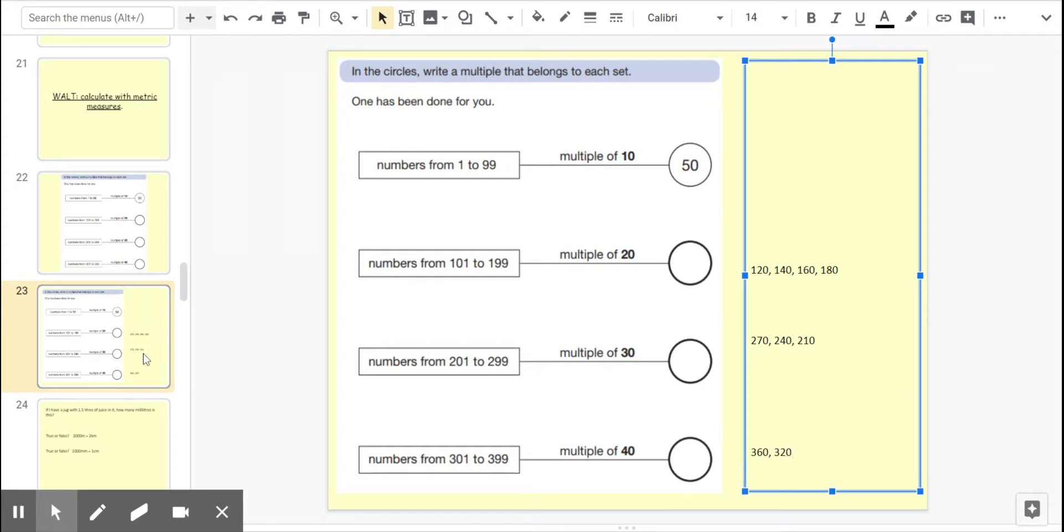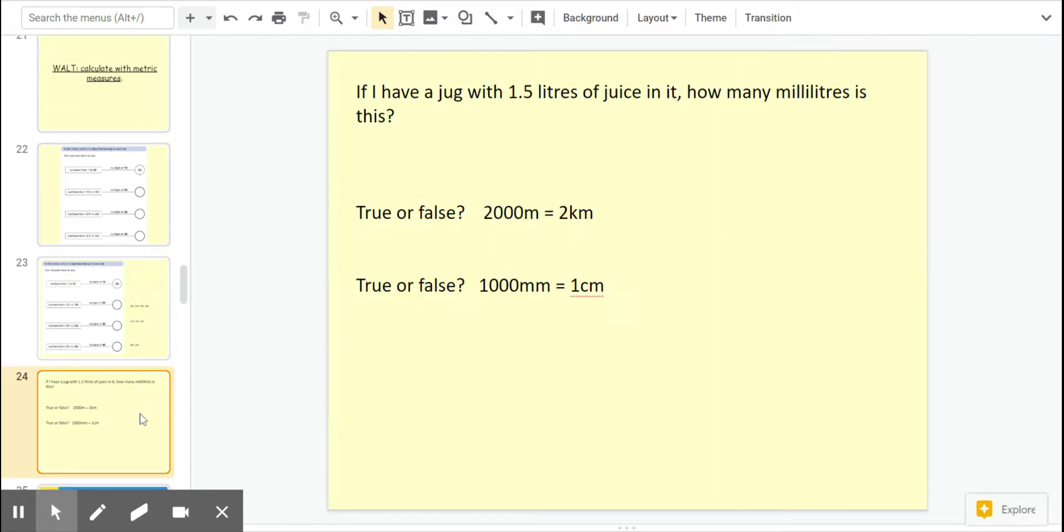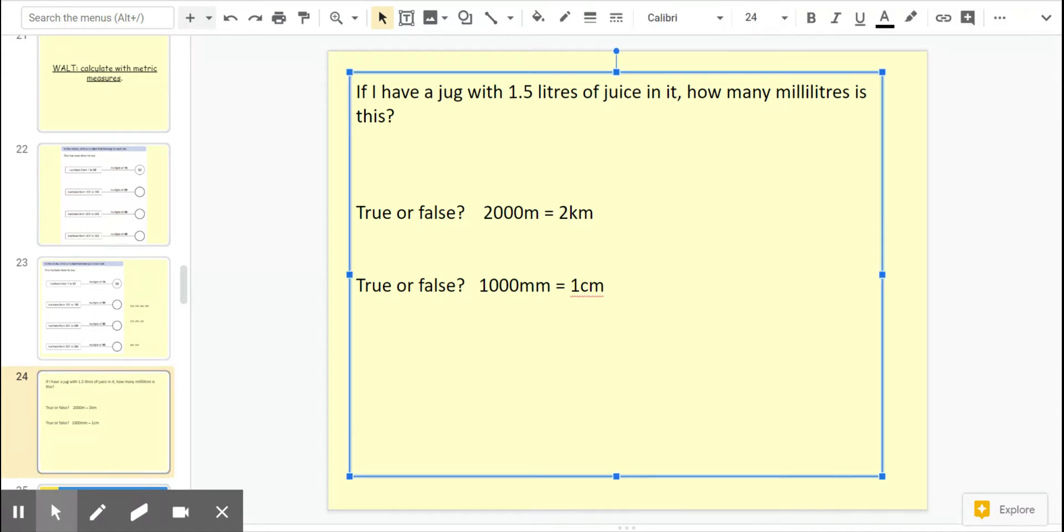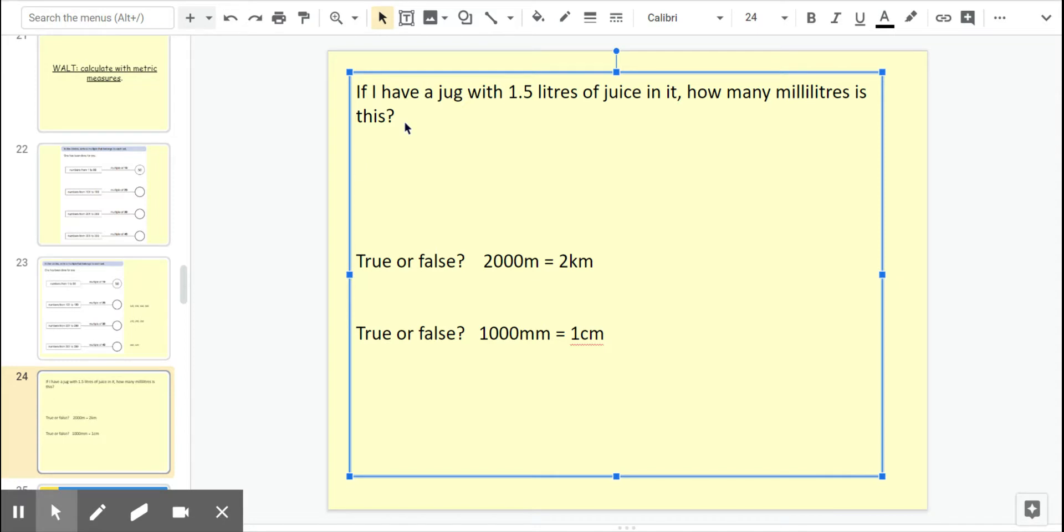Okay, so if I have a jug with 1.5 liters of juice in it, how many milliliters is this? Remember that there are 1000 milliliters in one liter, so work that one out. Pause me, write it down in your book in a proper sentence and come back to me. So you should have found that would be 1500 milliliters. Do not forget your unit of measurement.